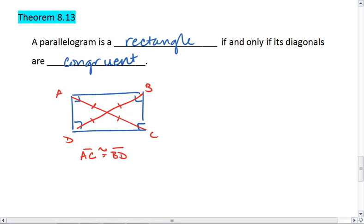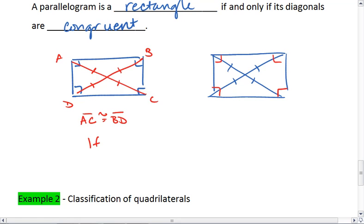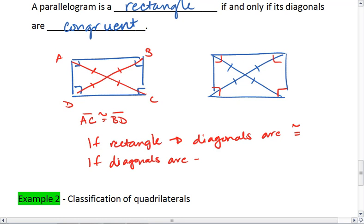Similarly, if diagonals are congruent to one another, then we must have a rectangle. So if a rectangle, then diagonals are congruent. If diagonals are congruent, then it's a rectangle.